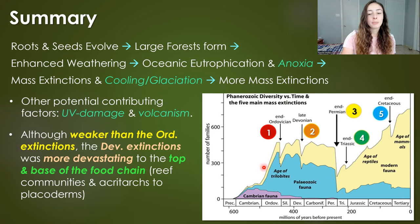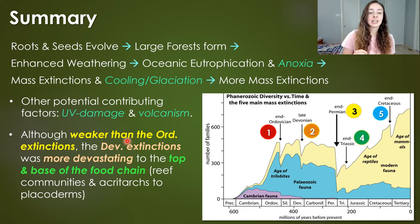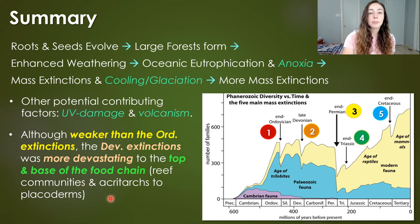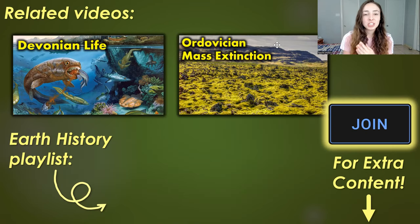Although weaker than the Ordovician mass extinction — the first of the big five — the Devonian extinctions were more devastating and had a more profound and prolonged effect because they heavily affected both the top and the base of the food chain, from reef communities and acritarchs at the base to placoderm fishes, the top predators at the time.